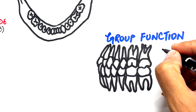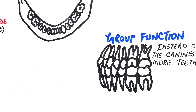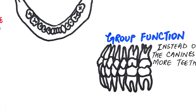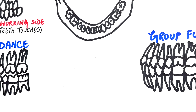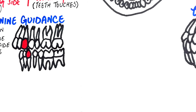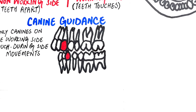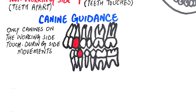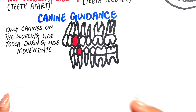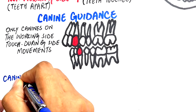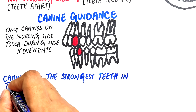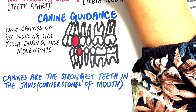Canine guidance and group function are critical concepts in restorative dentistry. Knowing when to use each is key to designing functional and long-lasting prosthetic work. Canines are the strongest teeth in the jaws, with the longest root and the strongest periodontal support — that's why they are often called the cornerstones of the mouth.